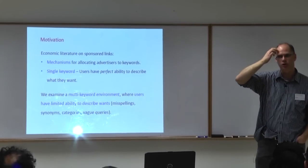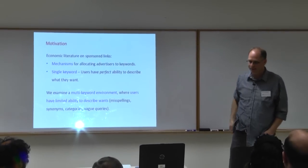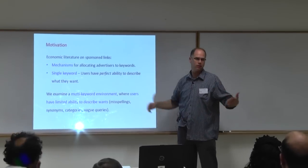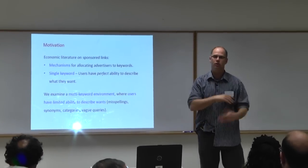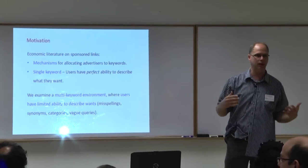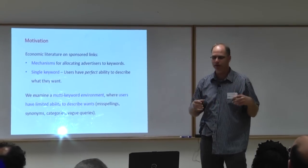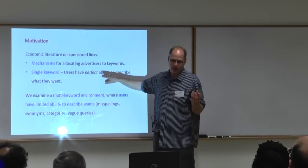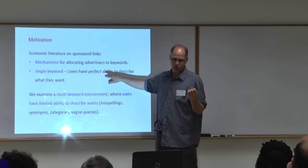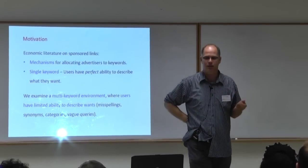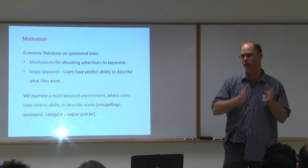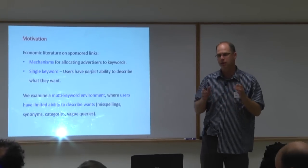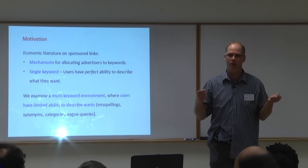This is a paper about search engines and sponsored links. Most of the economic literature on sponsored links has two features. First, it's in the mechanism design tradition — designing mechanisms, typically auctions, for allocating advertisers to keywords or queries. Second, it focuses on a single keyword or query at a time, implicitly assuming that users have perfect ability to describe what they want.